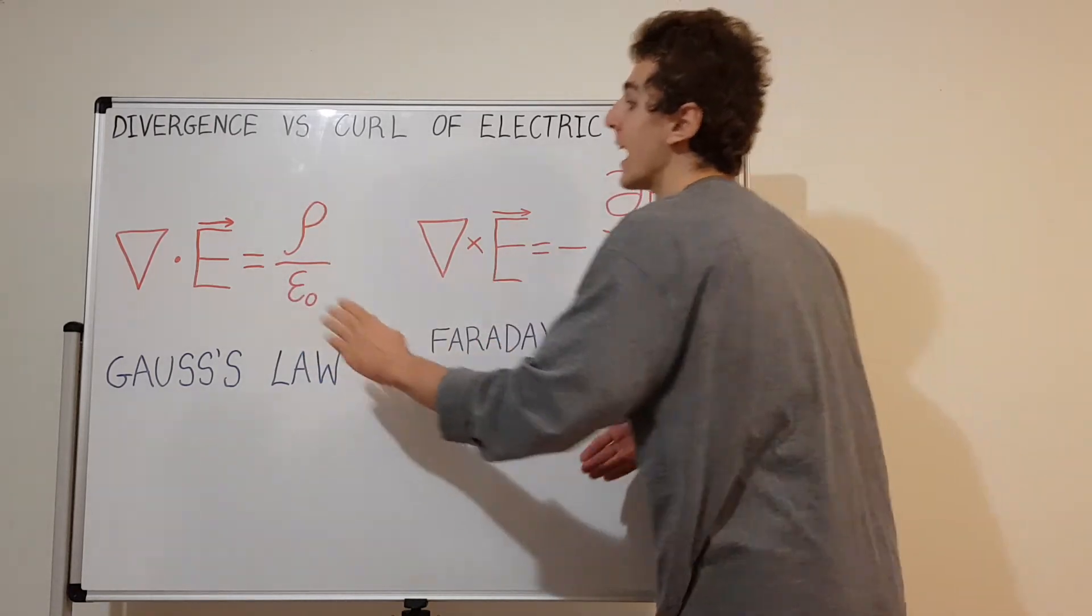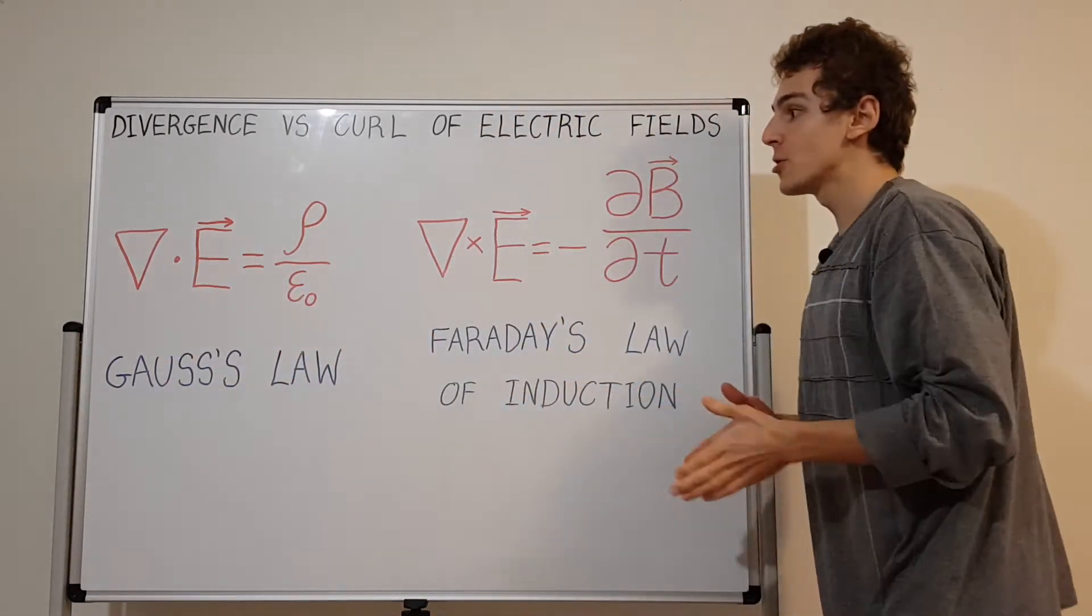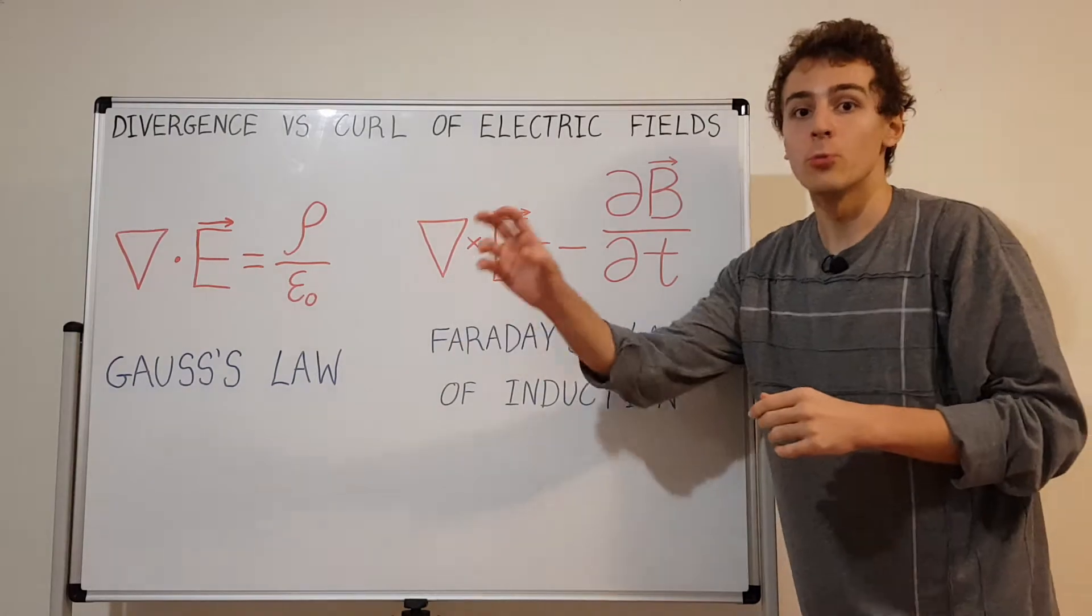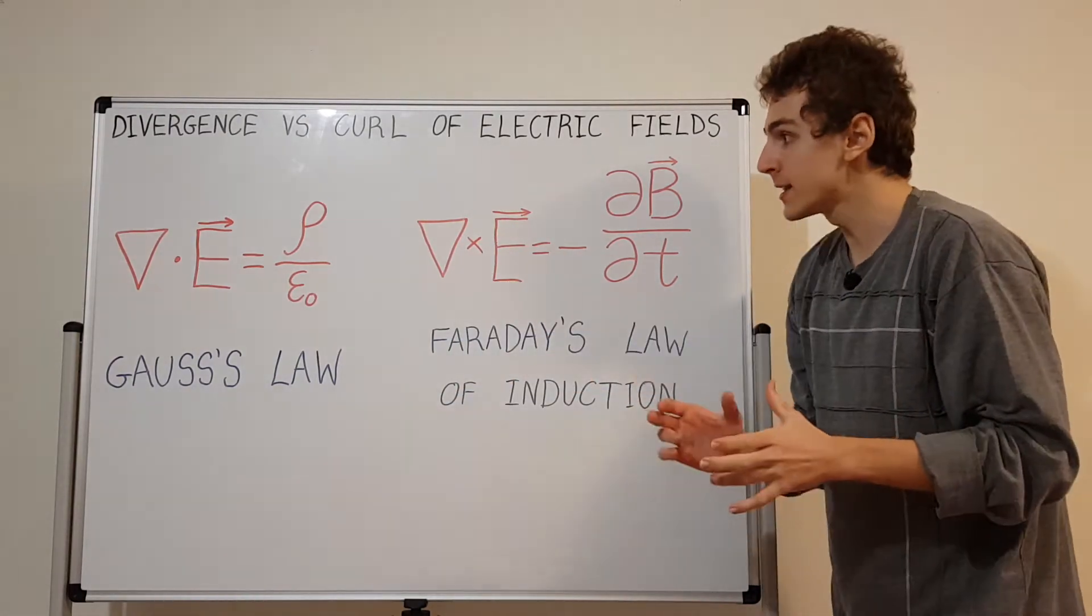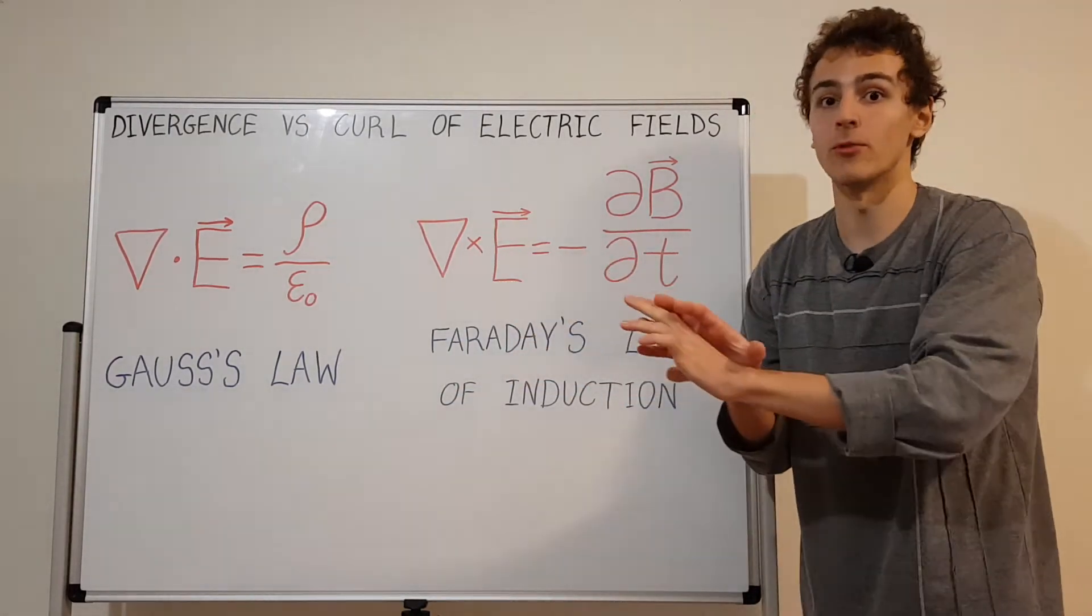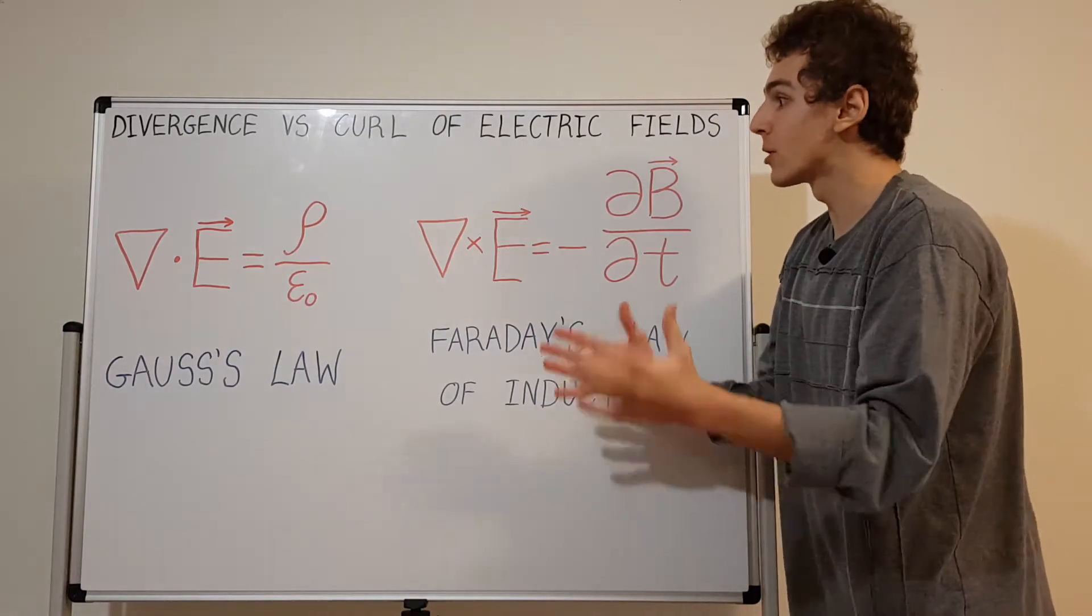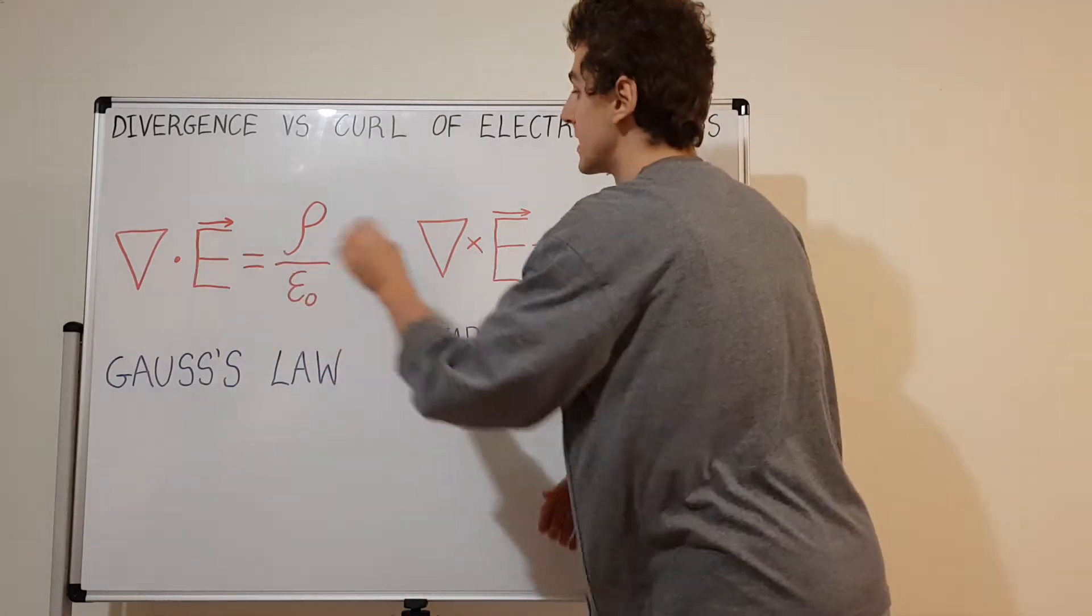This is a scalar quantity and we're dividing by a scalar quantity. The right-hand side is a scalar and the divergence, when you take the divergence, you differentiate with respect to each coordinate and sum those derivatives, giving you a scalar. Both sides are scalars.